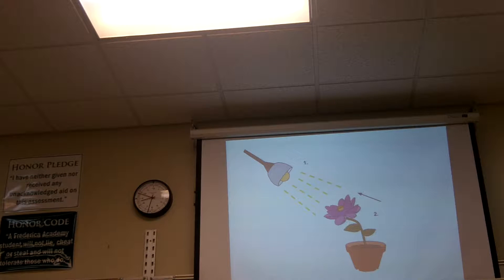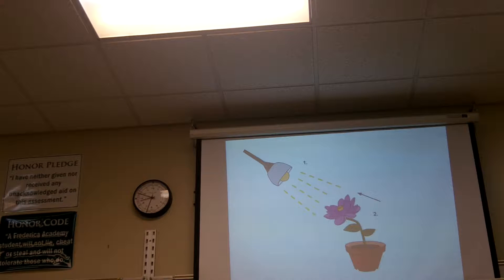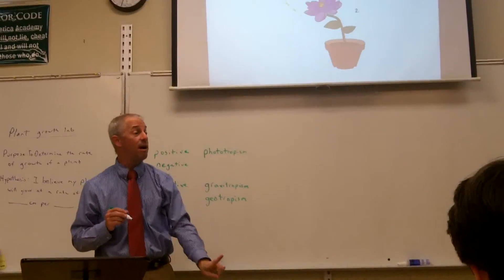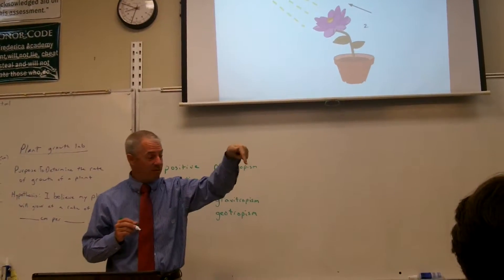But usually roots don't respond to light. They respond to gravity, and they move toward gravity. You know what it's called if it's moving toward gravity? It's not phototropism. Gravitropism. Sometimes instead of calling it gravitropism, it's called geotropism. Positive geotropism is moving toward gravity. Negative geotropism is moving away from gravity. The stem grows away from gravity. The root grows toward gravity.